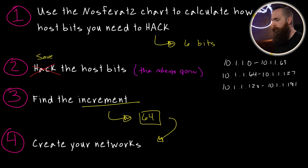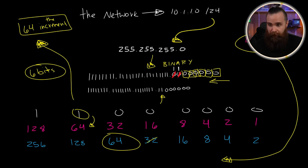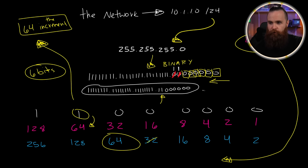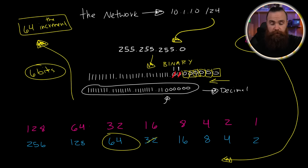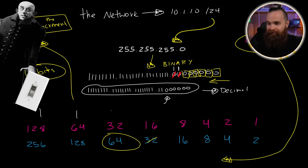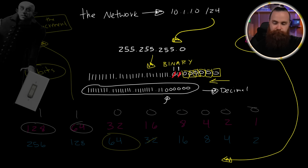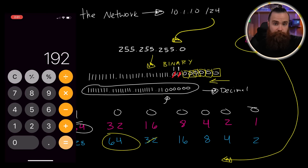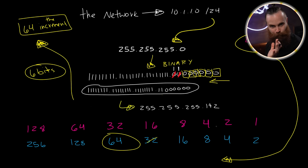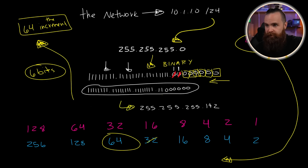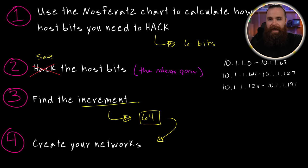10.1.1.128 through 10.1.1.191 — and right there are our three networks. Now, what's the subnet mask? Looking back at our work, we've got it in binary, but what is it in decimal? We know all ones equal 255, so the first three octets are 255.255.255. For the fourth octet, the first two bits are on — 128 plus 64 equals 192. And for CIDR notation, we count the network bits: 8, 16, 24, then 25 and 26 — so we have a slash 26 network.